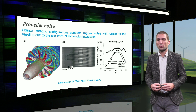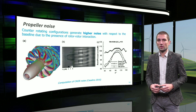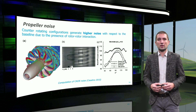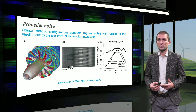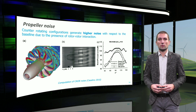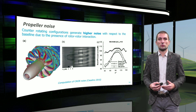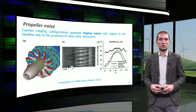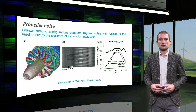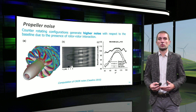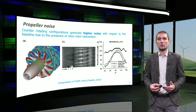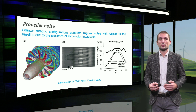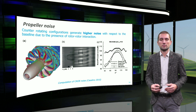If more complex configurations are used, the helical vortex system of the separate blades can impinge on the downstream rotor, creating additional sources of noise. This results in a combination of different components that can change the directivity pattern of the entire system.